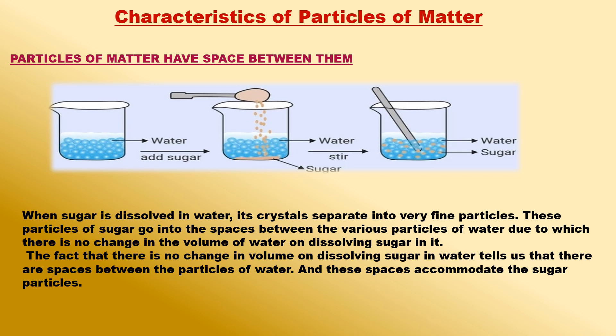Let us look at the level of sugar solution in the beaker. We will find that the level of sugar solution in the beaker is at the same mark where the water level was initially. This means that even after dissolving 50 grams of sugar in 100 ml of water, the volume has not increased. This can be explained by assuming that the particles of water have some spaces between them. When sugar is dissolved in water, its crystals separate into very fine particles.